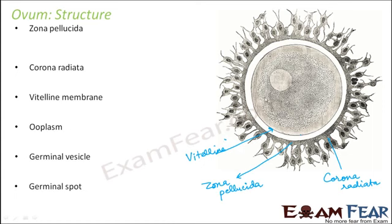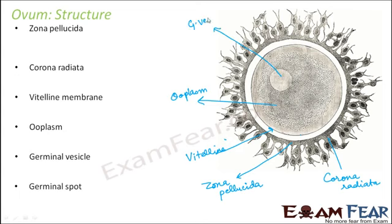Next is the ooplasm, which is nothing but the cytoplasm of the ovum. Since it is related to the ovum, the name has been changed to ooplasm. Germinal vesicle is nothing but the nucleus of the ovum. And germinal spot is nothing but the nucleolus — inside the nucleus you will have the nucleolus, and that is referred to as the germinal spot.